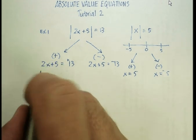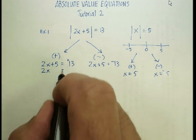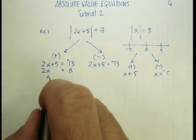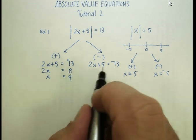Okay, so that's my first step, my second step. Let's subtract five from both sides. That's going to give me an eight. Let's divide by two. That's going to give me four.